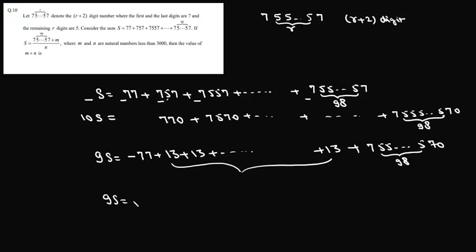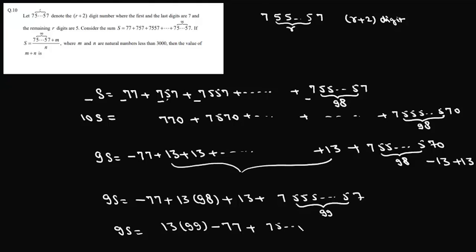So we can write this 9s as it will be minus 77 plus 13 into 98 plus, now here we need 755555557 99 times. So what we will do is we will subtract 13 and we will add 13. So here we will add 13 and if we subtract 13 it will become 755557. And now this is 99 times. So basically this is 9s and this is 13 into 99 minus 77 plus 755557.